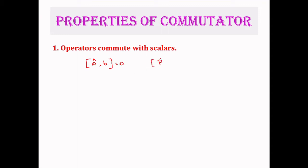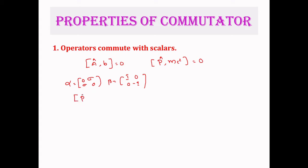For example, [p, mc²] = 0. While discussing the Dirac formalism, we discussed the Dirac matrices where α and β are matrices. The α matrix is (0, σ; σ, 0) and the β matrix is (I, 0; 0, -I), where σ are the Pauli spin matrices. So you can calculate [p, α], and its value will be 0. When we calculate [p, α] we get p·α minus α·p, where p = -iℏ∇.